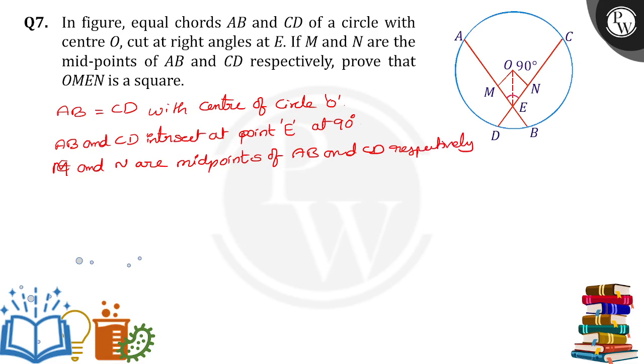Next, what we need to prove here, what we have to show that O, M, E, N is a square. So to prove that just observe carefully. Angle OME is equal to angle ONE. Both are equal to 90 degrees.